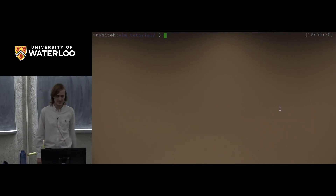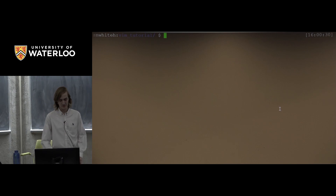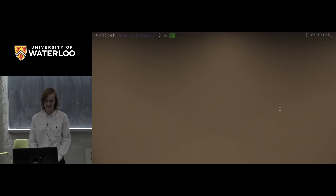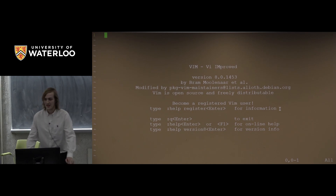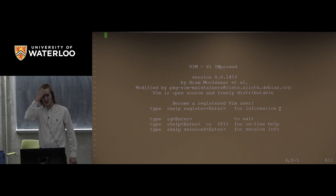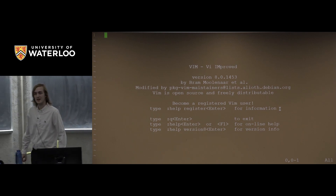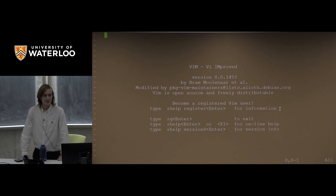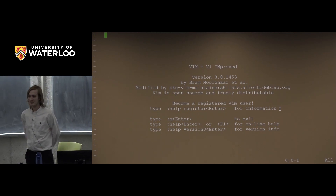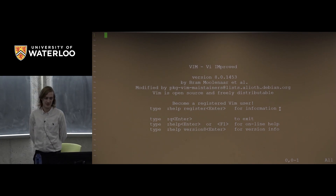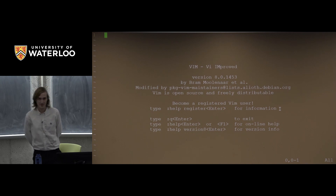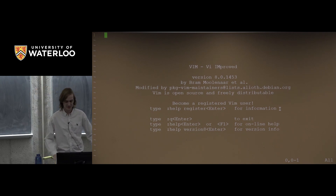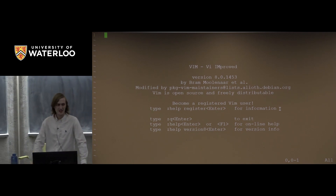Whenever I type Vim it should launch instantly — I shouldn't have to wait a second for it like Emacs does. When I use Vim, I'm hopping in and out of files and I don't need to worry about how much RAM my computer has. As the joke used to go, Emacs stands for '80 megabytes and constantly swapping,' which doesn't mean much anymore because 80 megabytes of RAM is a pitiful amount, but back when computers were younger that was kind of a big thing.